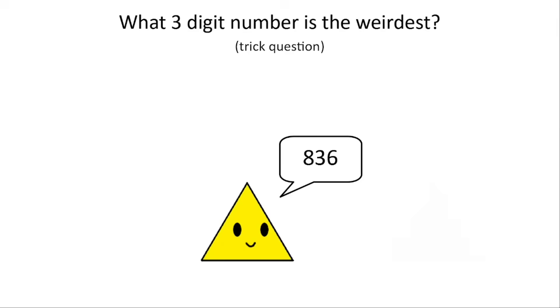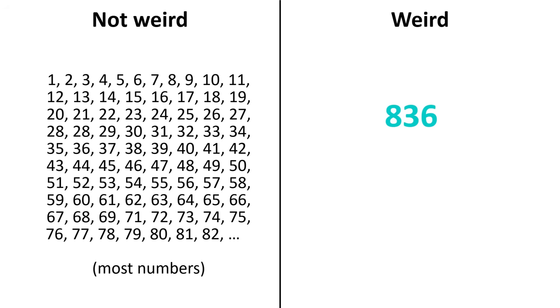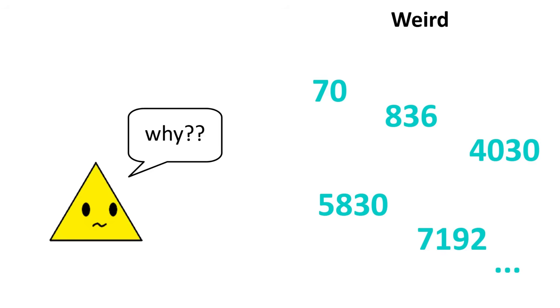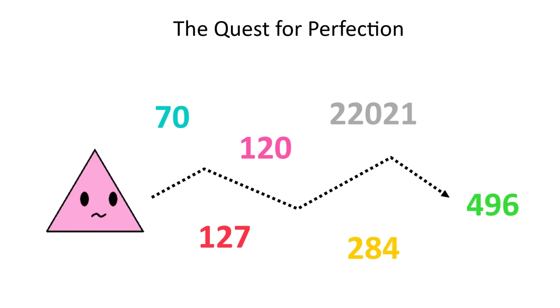You see, in number theory, there's a concept known as a weird number. The smallest one is 70, and the next few are 836, 4030, and so on. But what's so weird about these numbers? And more importantly, what's the motivation? What makes them so important that they hold the universally prestigious sequence title of simply weird? In this video, we'll answer these questions and show how it ultimately relates to the mathematical quest for perfection.